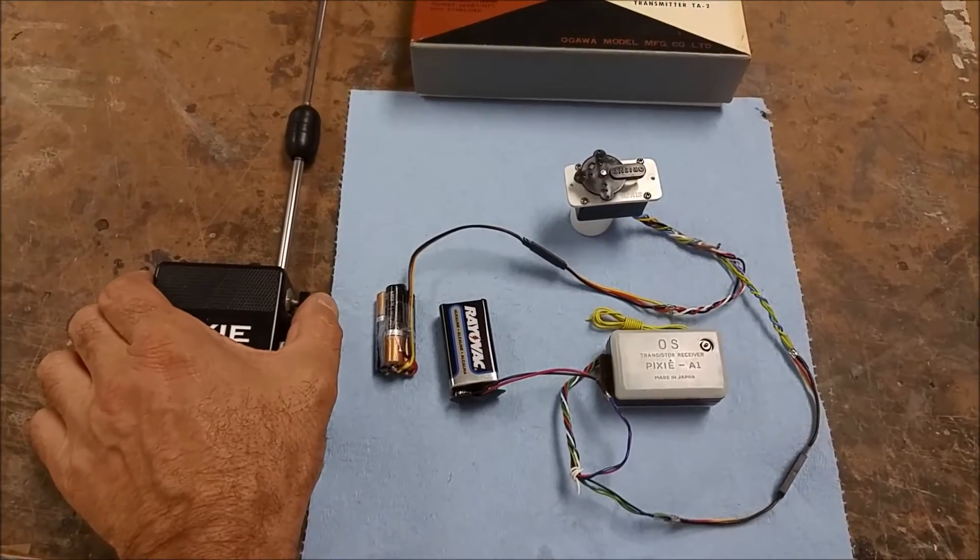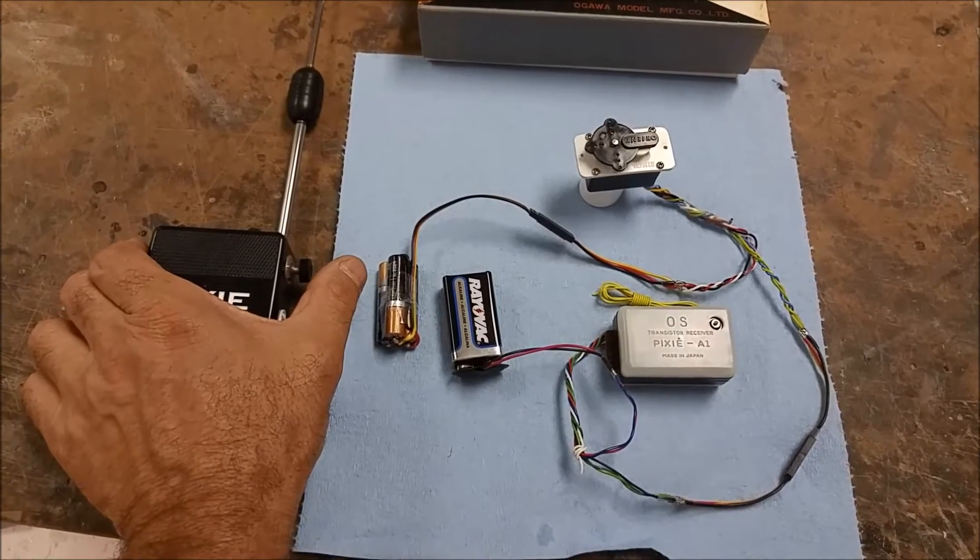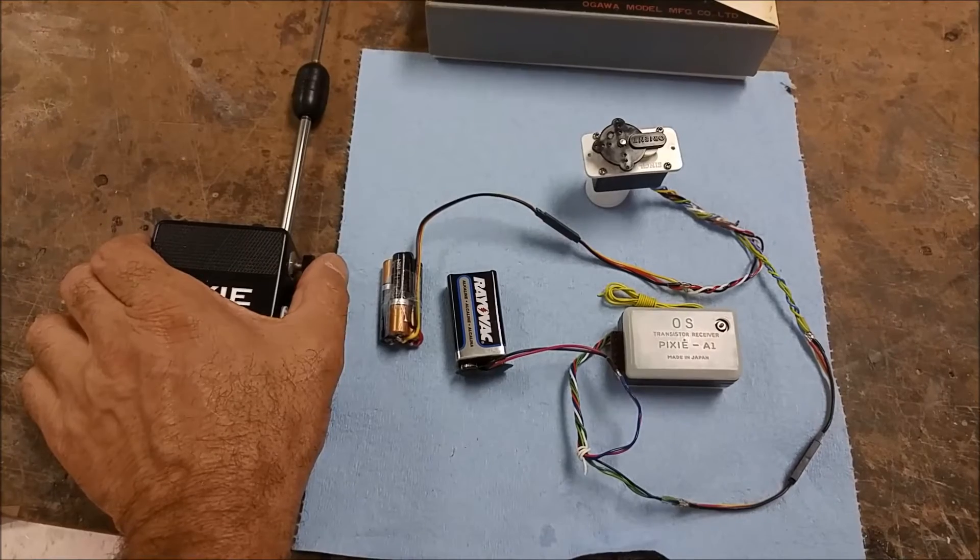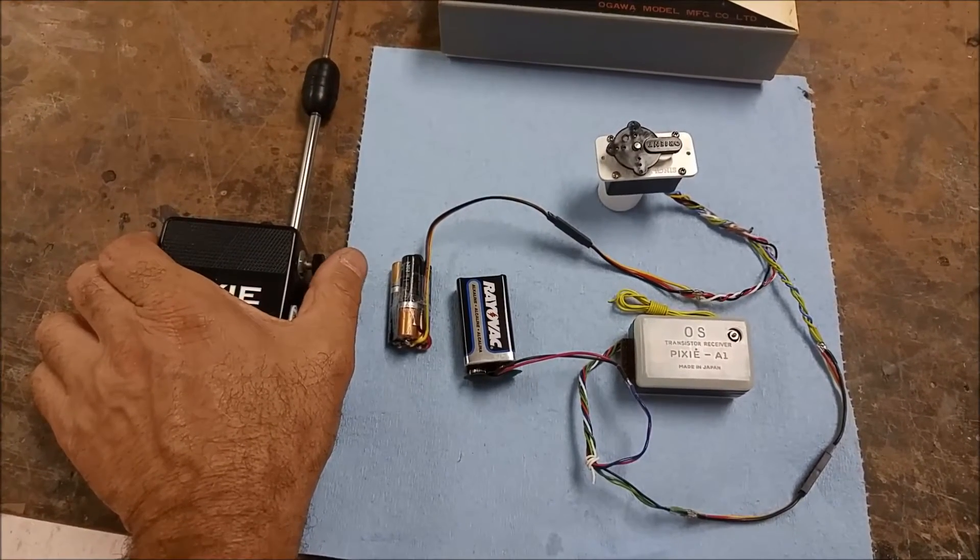So, if you push the button once, we get one direction on the servo, release it, it goes back to neutral. If you push it twice, you get the other direction, and it goes back to neutral if you release it.